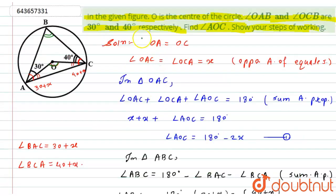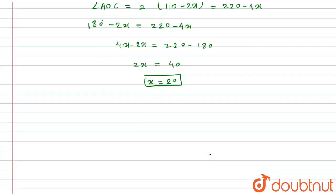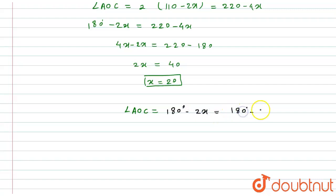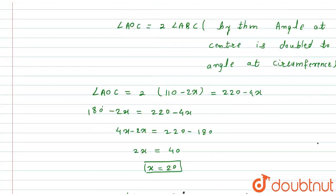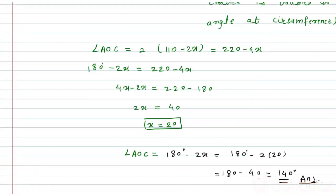Now, substituting x equals 20 into equation one: angle AOC equals 180 minus 2 times 20 equals 180 minus 40 equals 140 degrees. This is the required answer. I hope you liked the solution.